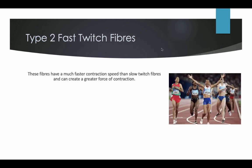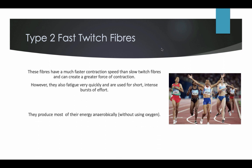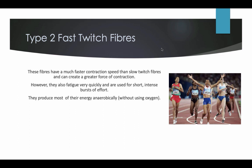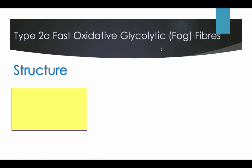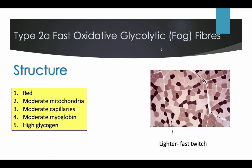Type 2 fast twitch fibres. These fibres have a much faster contraction speed than slow twitch fibres and can create a greater force of contraction. However, they also fatigue very quickly and are used for short, intense bursts of effort. They produce most of their energy anaerobically. There are two types of fast twitch fibres: type 2A and type 2B. Type 2A fast oxidative glycolic fibres, also known as FOG. Their structure: they are red, have moderate mitochondria, moderate capillaries, moderate myoglobin, and high glycogen.